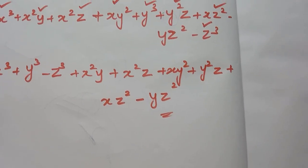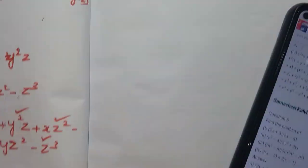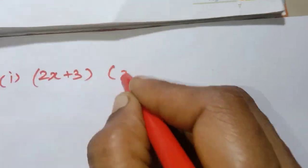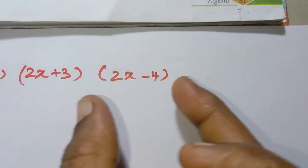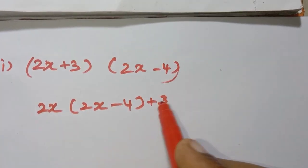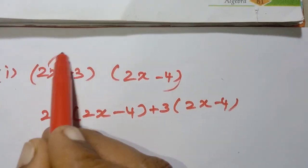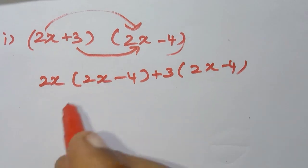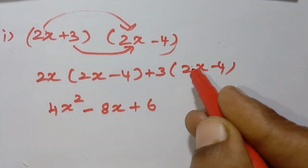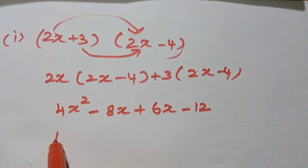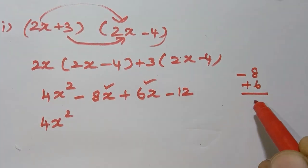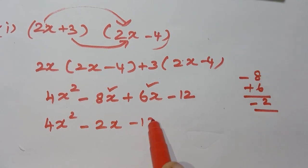Fifth sum — find the product. First one: (2x plus 3) into (2x minus 4). Multiply 2x into (2x minus 4): 2 times 2 is 4x², plus into minus gives minus 8x. Then 3 into (2x minus 4): plus 6x minus 12. Combining like terms: minus 8x plus 6x is minus 2x. Answer is 4x² minus 2x minus 12.